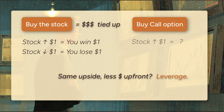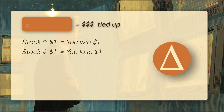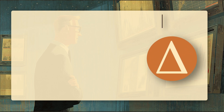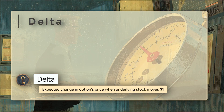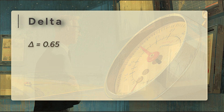Now the stock ticks up by $1. What happens to the option's price? Maybe it rises by $0.50, maybe $0.80. The exact amount is measured by delta. Delta is the first and most fundamental of the Greeks. It measures how much an option's price is expected to change for every $1 move in the underlying stock's price. Think of it as the speedometer for your option's directional exposure.